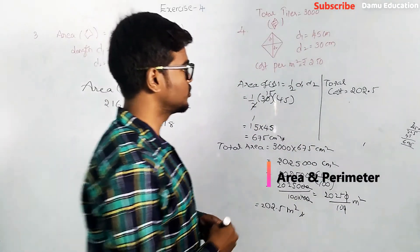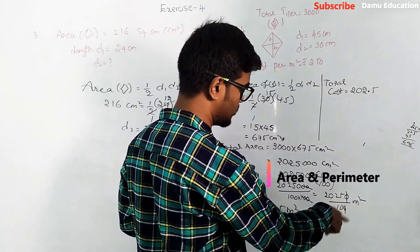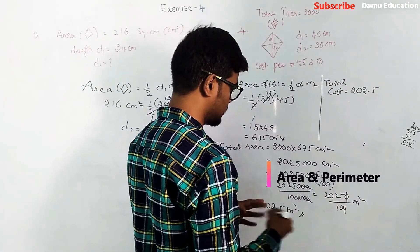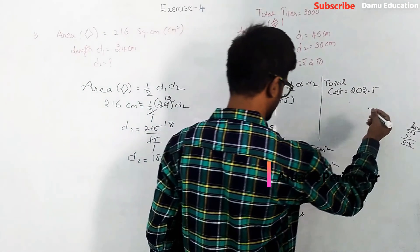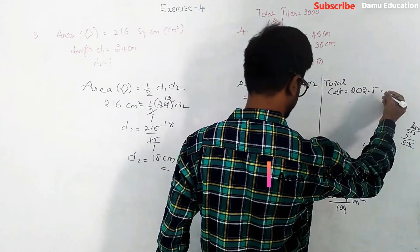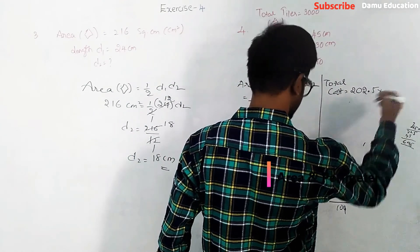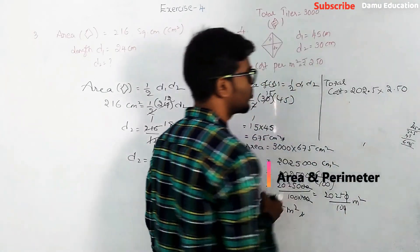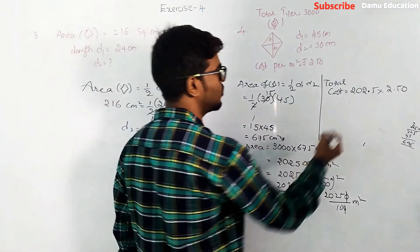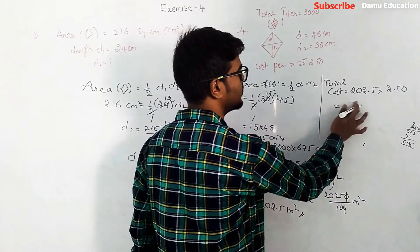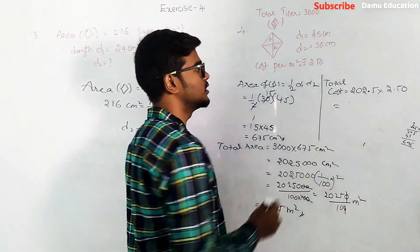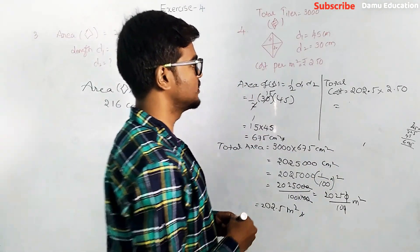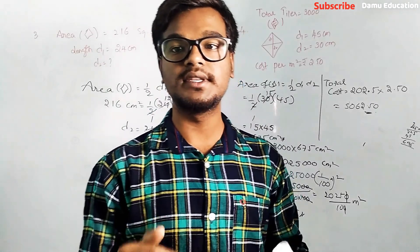202.5 into 2.50. So 202.5 times 2.50, what is the total? Simply we have to calculate 202.5 into 2.50. If you have any doubts in this video, please comment below.